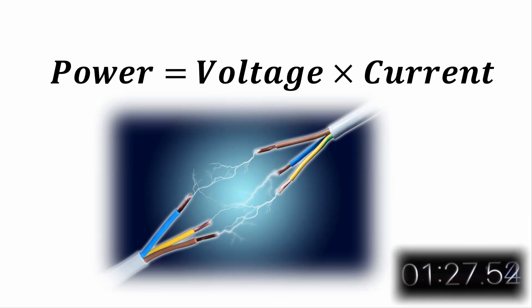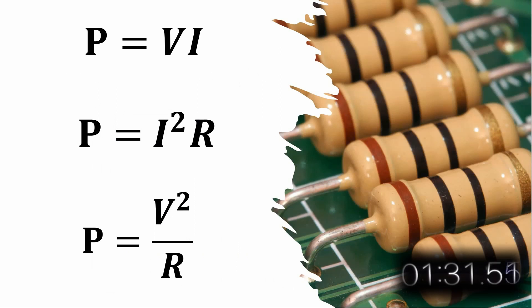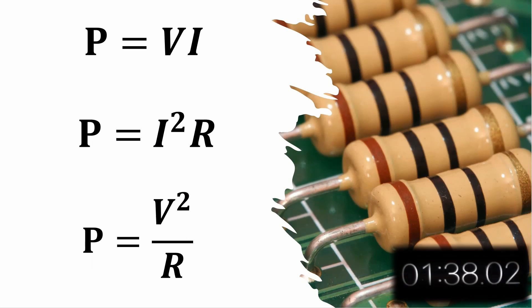So in summary, in electrical circuits, power is always equal to voltage times current. And for the special case of resistive elements, the power equation can take three different forms, P equals VI, P equals I squared R, or P equals V squared over R. Hopefully that furthers your understanding of power in electrical circuits.